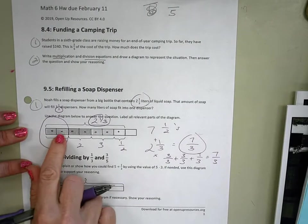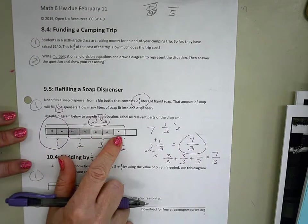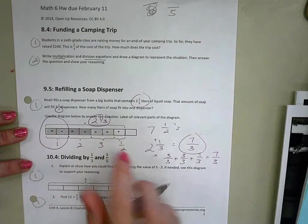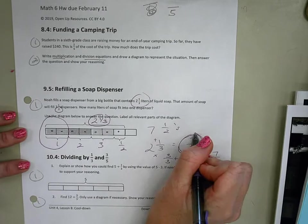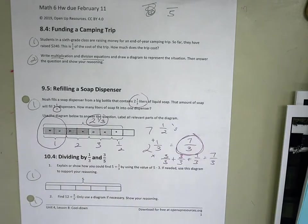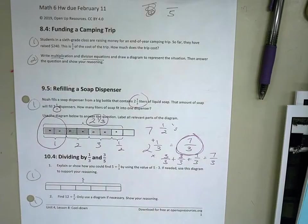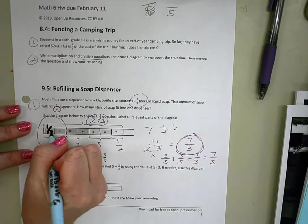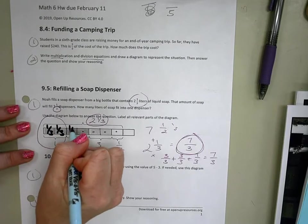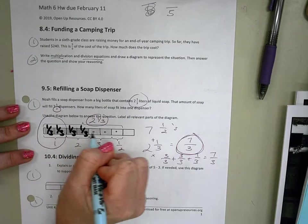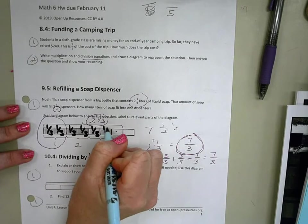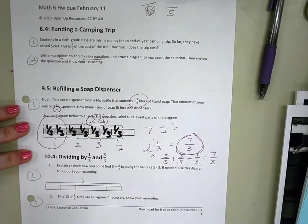and I'm going to put them equally into each of these seven boxes. So if I have seven boxes, and I have seven thirds, what fraction do I want to put in each box? One third, right? Because then I have one third, two thirds, three thirds, four thirds, five thirds, six thirds, seven thirds.